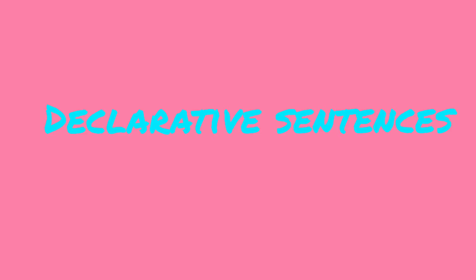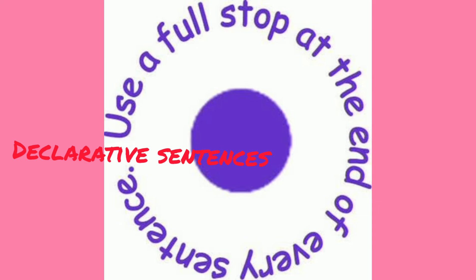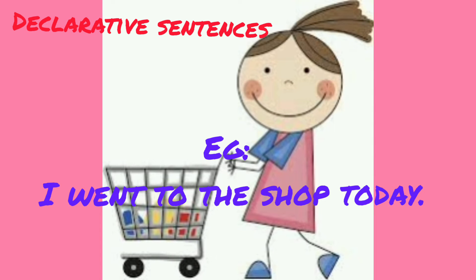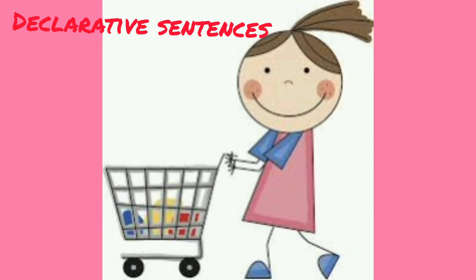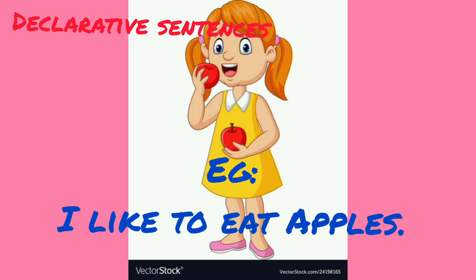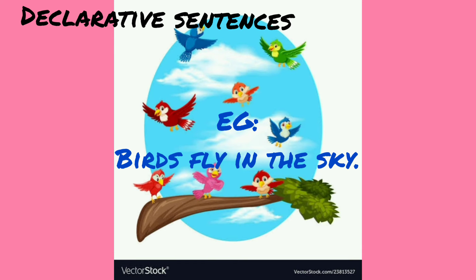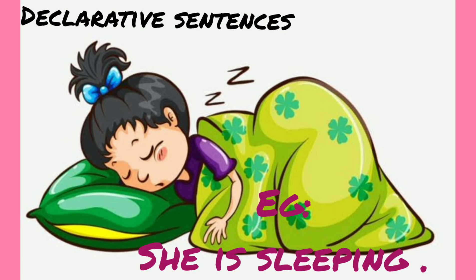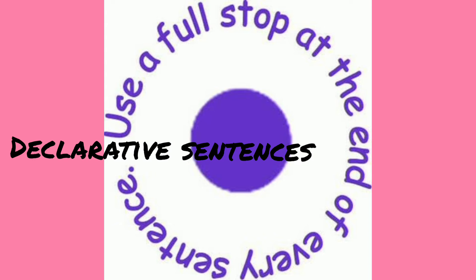Let us start from declarative sentence. This sentence is a statement that tells us something. It ends with a full stop. For example: I went to the shop today. My name is Jasmine. I like to eat apples. Birds fly in the sky. She is sleeping. This type of sentence usually ends with a full stop.